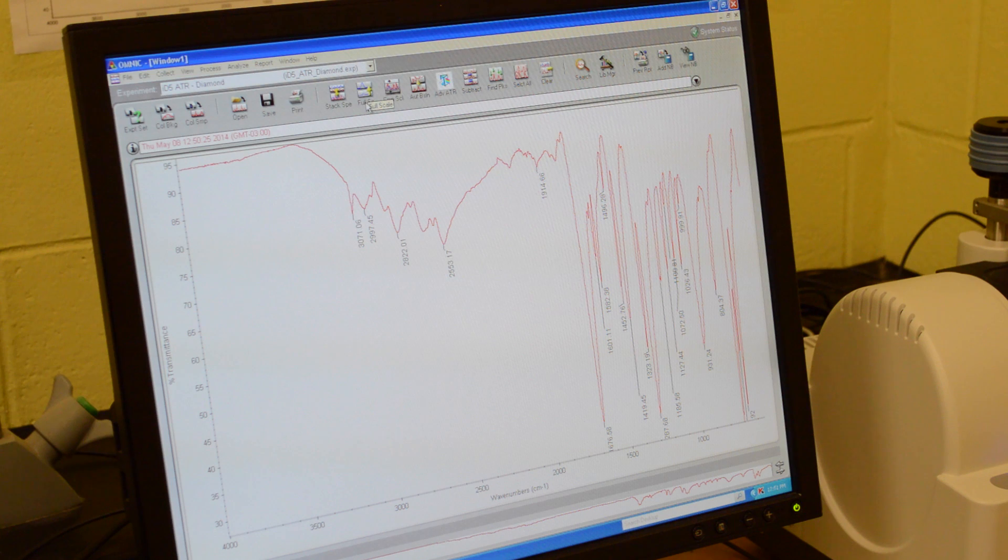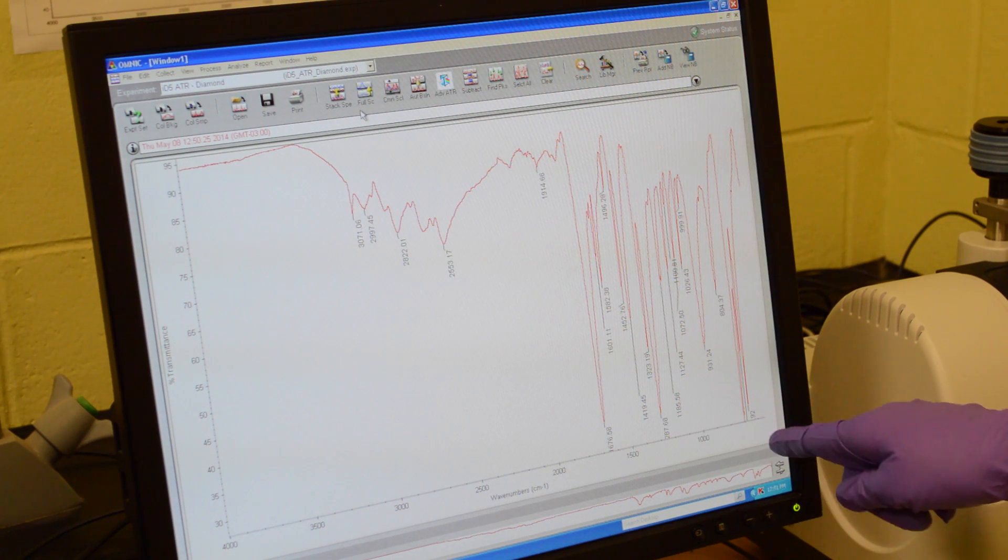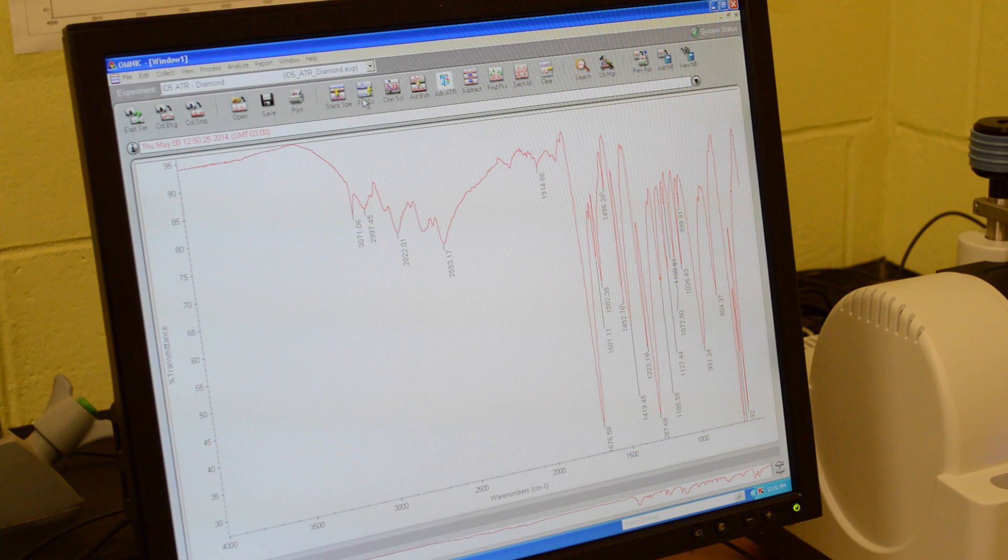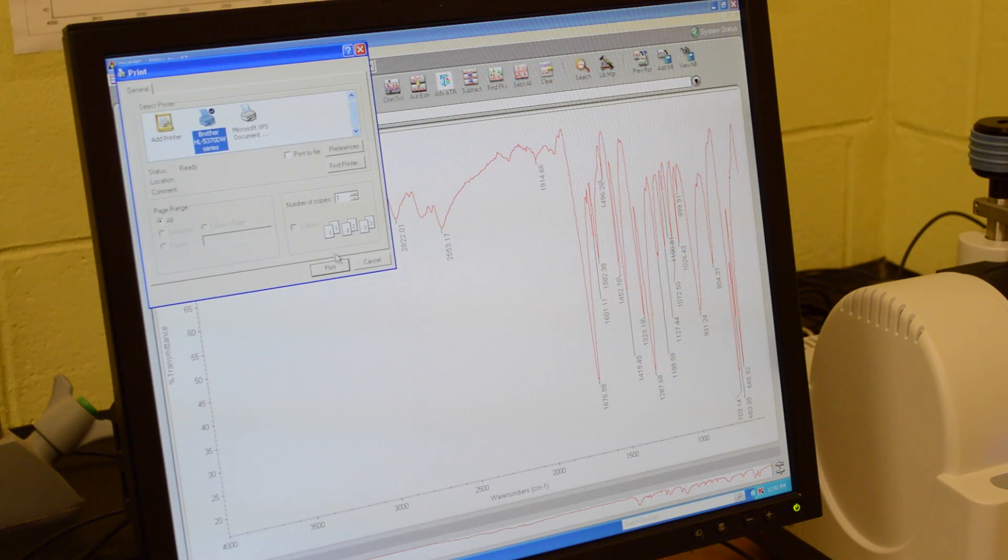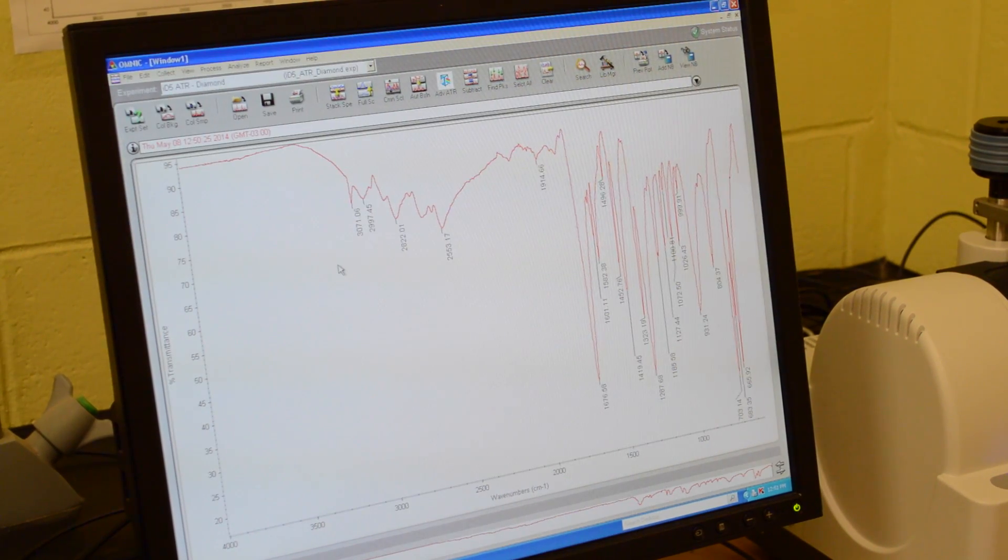The last thing you're going to want to do, especially if you're printing, is press the full scale button. As you can see, some of the measurements have been cut off due to the scale. If you press full scale you'll be able to see all of the wave numbers. Then you can just press print, and it will come at that printer right there.